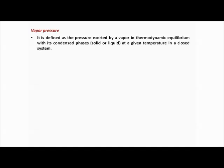This vapor pressure is measured at a given temperature in a closed system. Suppose there is a closed bottle — we have put substance A inside. Since substance A is volatile, the pressure exerted by the vapor produced by substance A on substance A itself is the vapor pressure, and that should be in a thermodynamic equilibrium state.